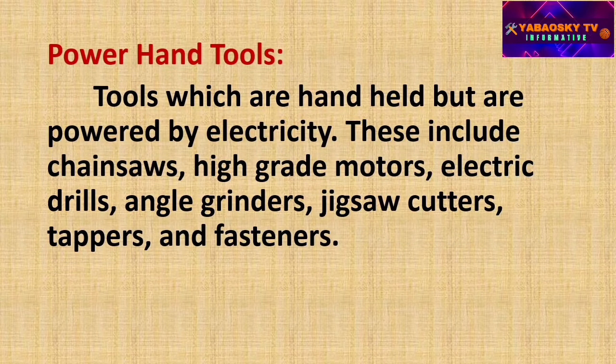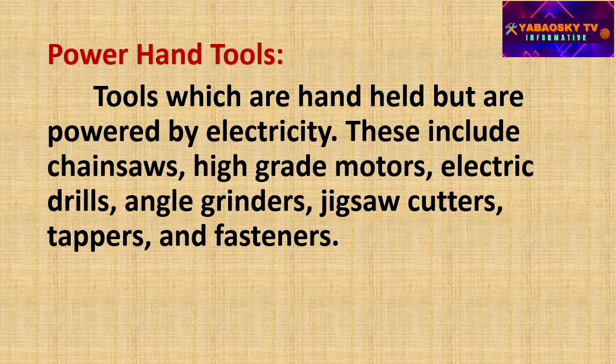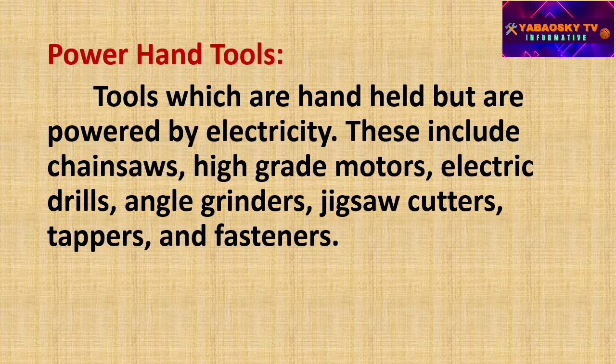The next one is power hand tools. These are tools which are handheld but are powered by electricity. They include chainsaws, high-grade motors, electric rails, angle grinders, jigsaw cutters, tampers, and fasteners, among many more equipment that uses electricity.